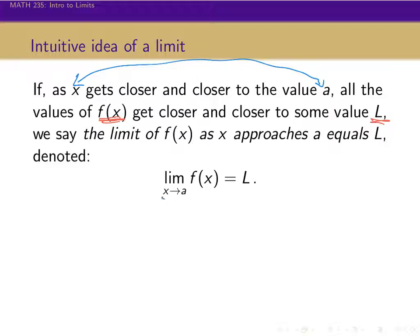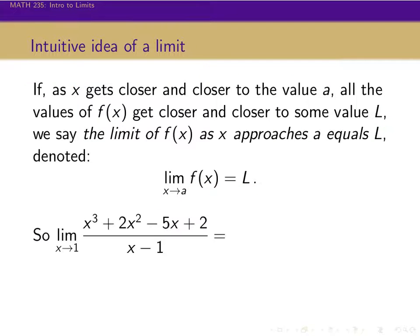As the x values get close to a, the y values — the values of the function f(x) — are all getting closer to L. So in our last example with this rational function, as our values got closer and closer to 1, the values of the function got closer and closer to 2. And so we will say the limit of this function as x approaches 1 equals 2.